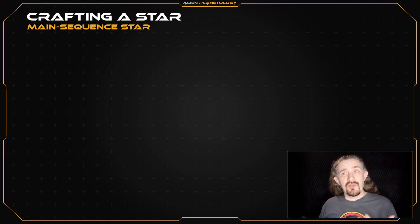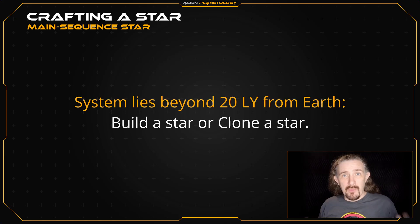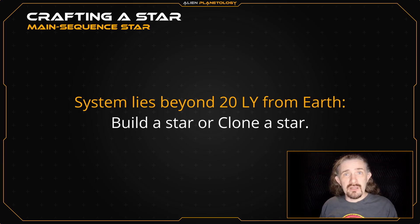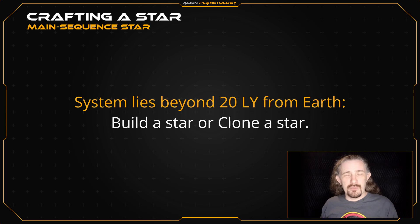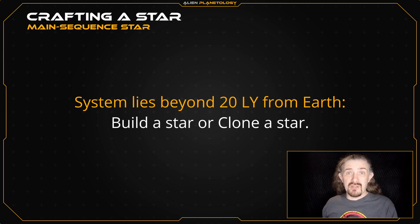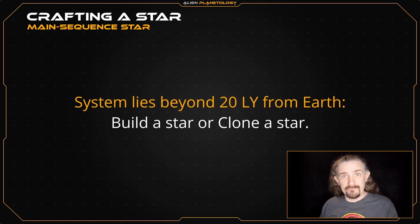There are two methods that we can use to create a custom star. The first, and my favorite, is that we can build one. This is what the majority of this video and subsequent videos will discuss. This method has the benefit of giving you total control over the star's properties, which allows you to tailor it to fit the type of planetary system you want to put around it. Plus, in my opinion, building stars is just more fun. However, this method is also the most complicated and time consuming, which is why I need so many videos to teach you how to do it properly. The second method is cloning a star.